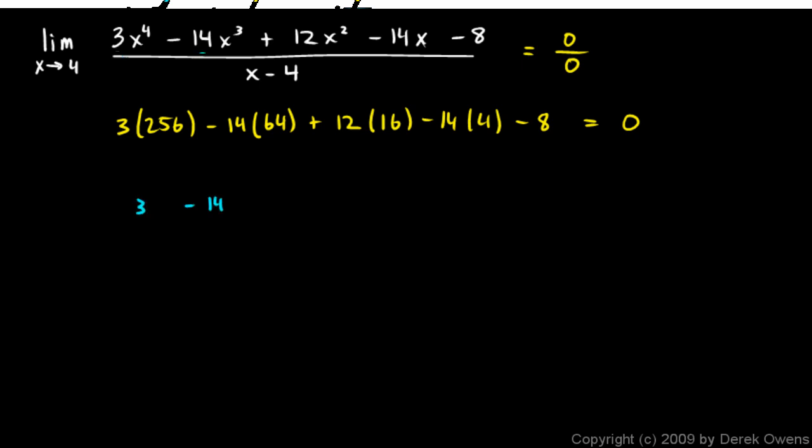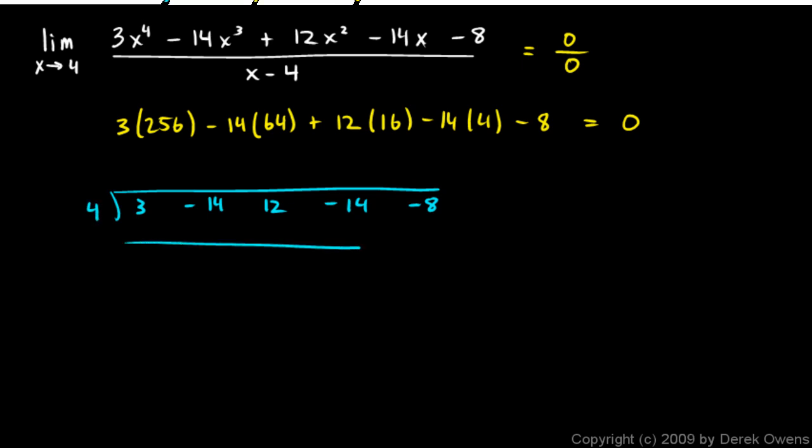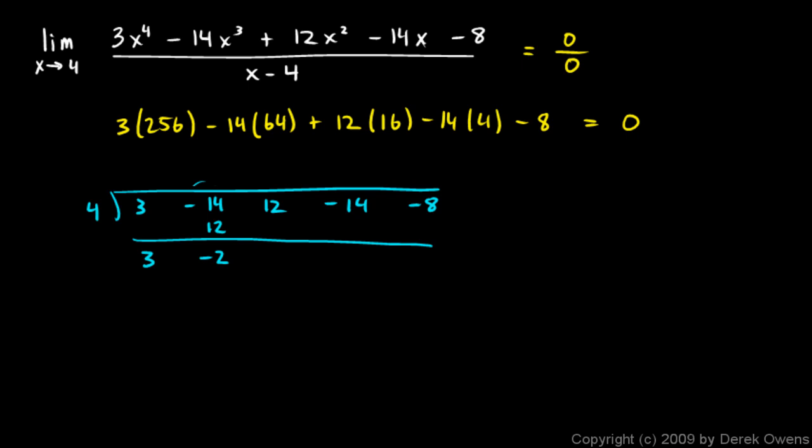3, negative 14, 12, negative 14, negative 8. And let's try to factor out that x minus 4. And so here we go. 3 times 4 is 12. And we add and we get negative 2. Negative 2 times 4 is negative 8. And we add right there and we get 4. 4 times 4 is 16. And we add and we get 2. And 2 times 4 is 8. And then we add there and we get 0. So we got it.